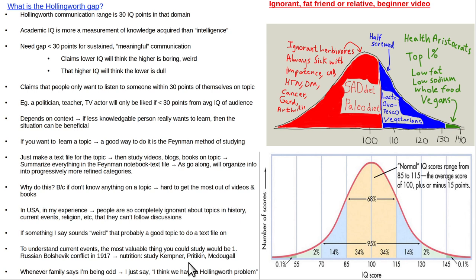Once you have that foundation, you can add on concepts from more modern lectures. Whenever somebody in my family says I'm being odd or autistic, I just say I think we have a Hollingsworth problem — it's a polite way of saying they don't get it. And I drew a normal distribution curve as a joke about health as it relates to diet.